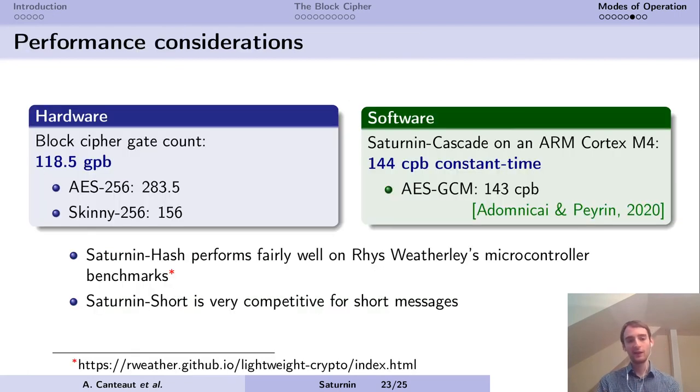About performance: the block cipher has a rather small gate count. In software, Saturnin Counter Cascade performs as good as the AES, but it has a higher block size and bigger blocks. Saturnin Hash performs fairly well on the microcontroller benchmarks of NIST Lightweight, and Saturnin Short is very competitive for short messages because it only requires calling Saturnin once.